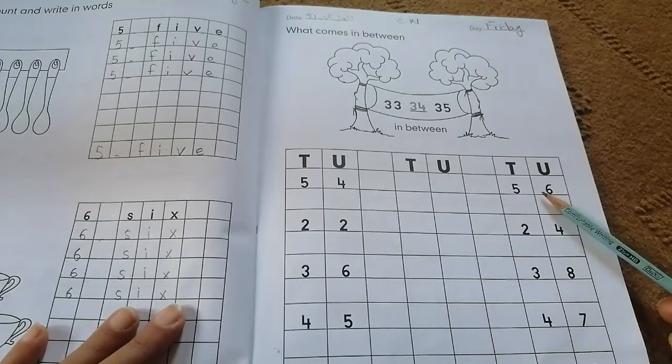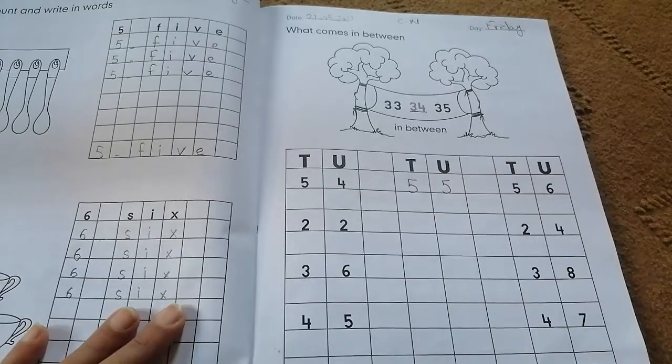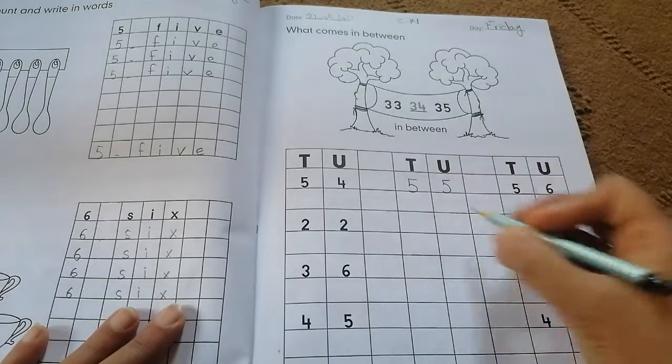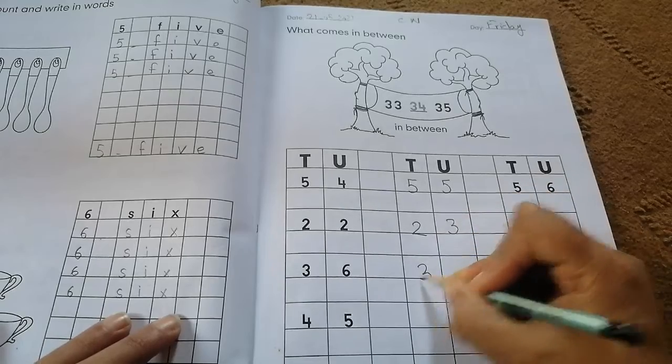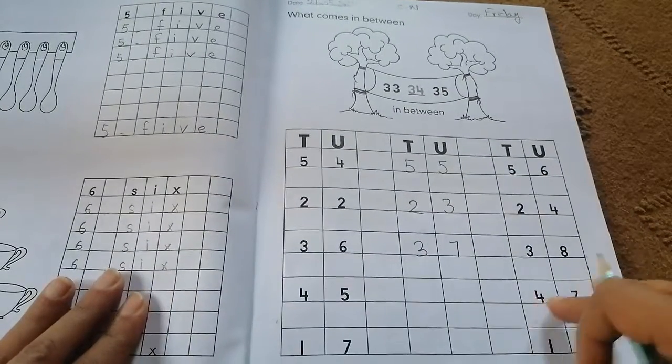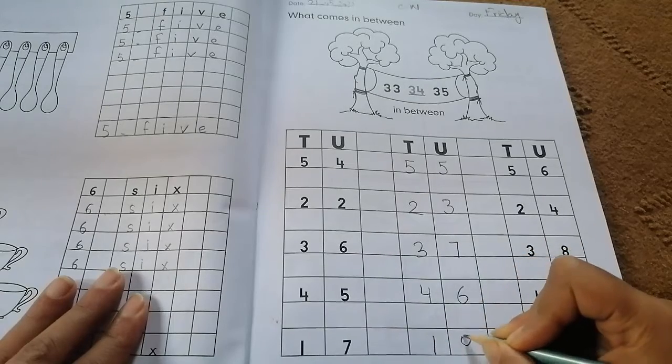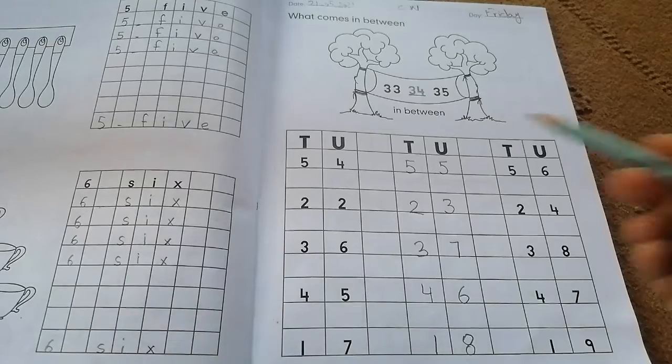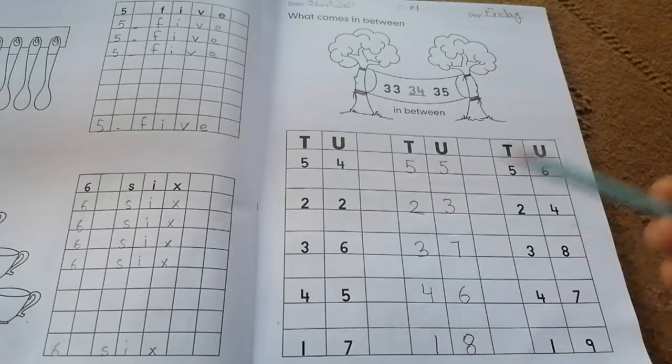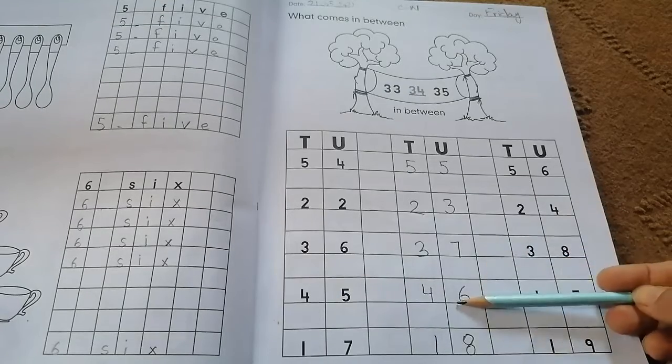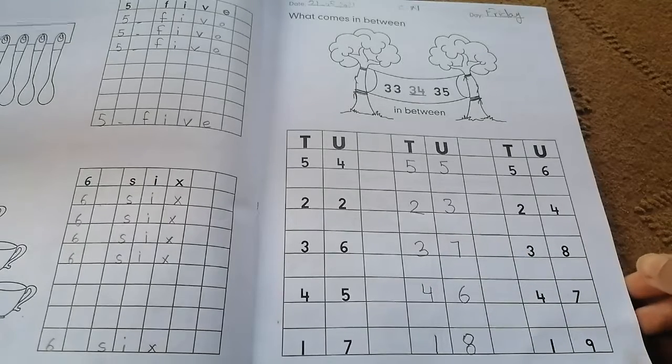Now look at the next number: 54 and 56. What comes between 54 and 56? 55. What comes between 22 and 24? 22, 23. 36 and 38? 37. 45 and 47? What comes between 45 and 47? 46.